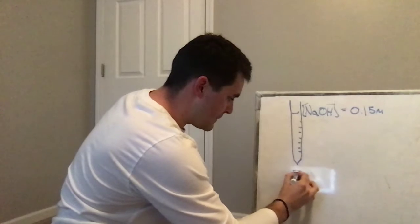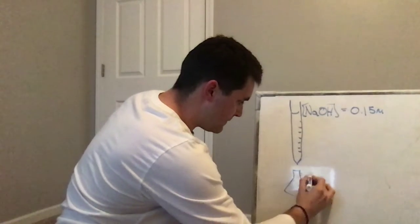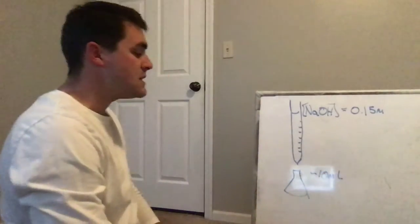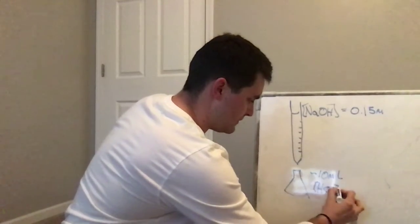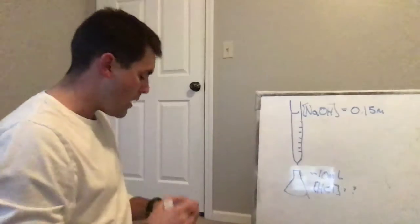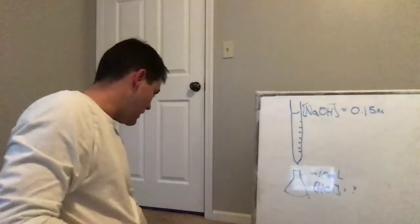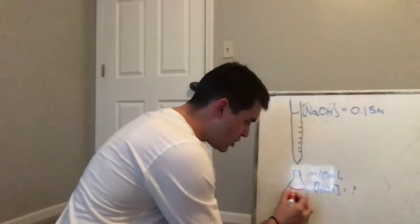And we went ahead and dropped it into an Erlenmeyer flask that had roughly, it was different for every trial, but it had roughly 10 milliliters of hydrochloric acid in it. And the hydrochloric acid concentration was the unknown. We had no idea what that concentration was. So our job was to add a certain amount of base, or sodium hydroxide, until that solution turned just pink.